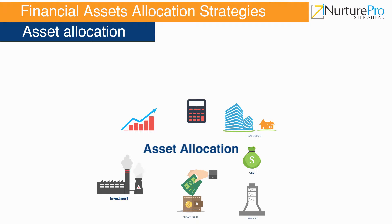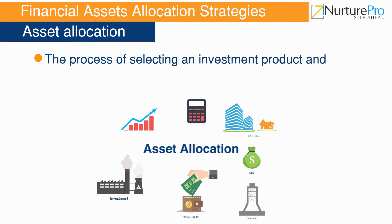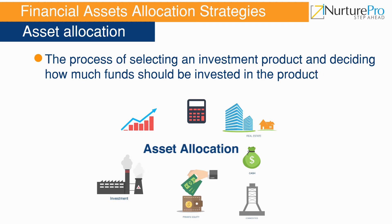To earn the maximum amount from a single product, proper asset allocation is essential. While preparing an investment portfolio, investors want to invest funds in more than one investment product. Asset allocation helps in selecting an investment product and deciding how much funds should be invested in different products. If a product doesn't work well, the investor may suffer a huge loss. To avoid this, one has to follow certain strategies for effective asset allocation.